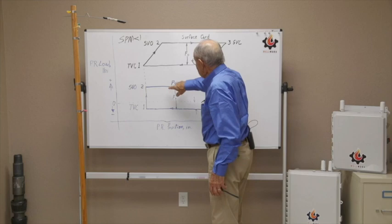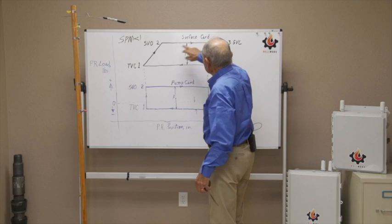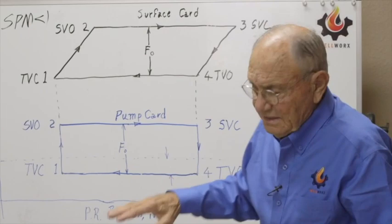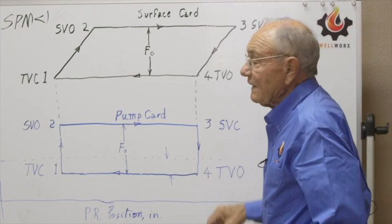Alright, so my pump is now at the top of the stroke. So I went from point two to point three. And the minute that pump stops moving upwards, what's the standing valve going to do? It's going to drop on seat. The gravity, mainly, is what closes it. So the traveling valve drops on seat. Now I'm at point three.